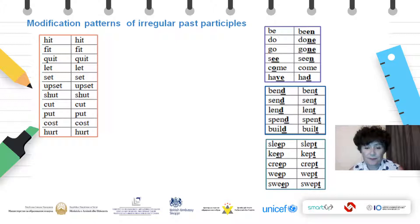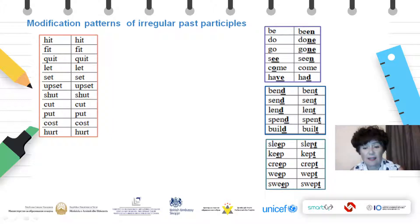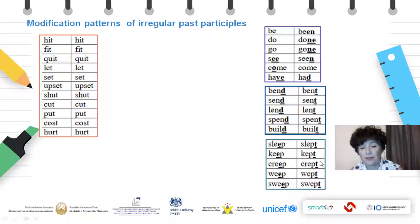The next one also has a common change. Can you explain it to yourself? We have double E in spelling, pronounced with a long E: sleep, keep, creep, weep. And then the double E turns into a single E, and the final P turns into T — so instead of P, we have PT. Sleep, slept. Keep, kept. Creep, crept. Et cetera, et cetera.